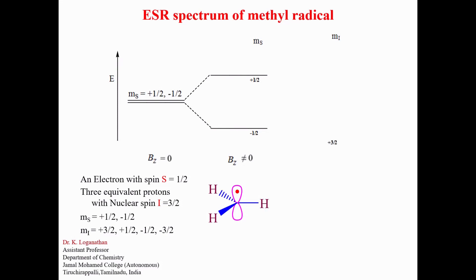First, the lower energy level with MI plus three-halves. Then, next higher energy levels with MI plus one-half, minus one-half, and minus three-halves.